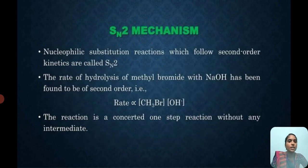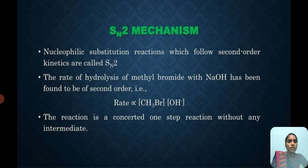Here comes the second, bimolecular nucleophilic substitution reaction, SN2. The rate of this reaction is a second-order reaction because it depends upon two reactants. That is why the rate of the reaction is second-order. It depends upon methyl bromide and NaOH, i.e., OH⁻ ion concentration.